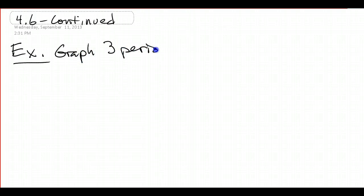So 4.6 continued. Alright, and really we're just going to look at one more example here for graphing cotangent. So we want to graph three periods of y equals 2 cotangent x minus pi over 2. Alright, so just like always, let's find a, b, c, and d.